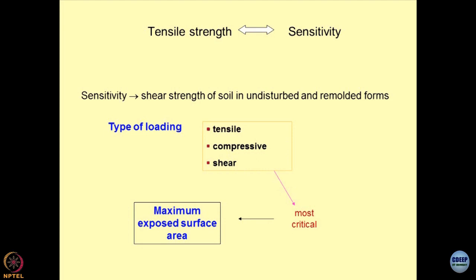The type of loading becomes very important. When we talk about tensile strength, we have to understand what type of loading the soil mass is undergoing. There are three types of loading: tensile stresses, compressive stresses, and shear stresses. Under no-shear condition, if we consider what tensile and compressive stresses do to the sample, this becomes a critical situation. We have to understand what tensile and compressive loading does to the arrangement of grains in the soil system. This is where the concept of maximum exposed surface area is introduced, which is responsible for tensile and compressive loading, and ultimately gets linked to the tensile strength.